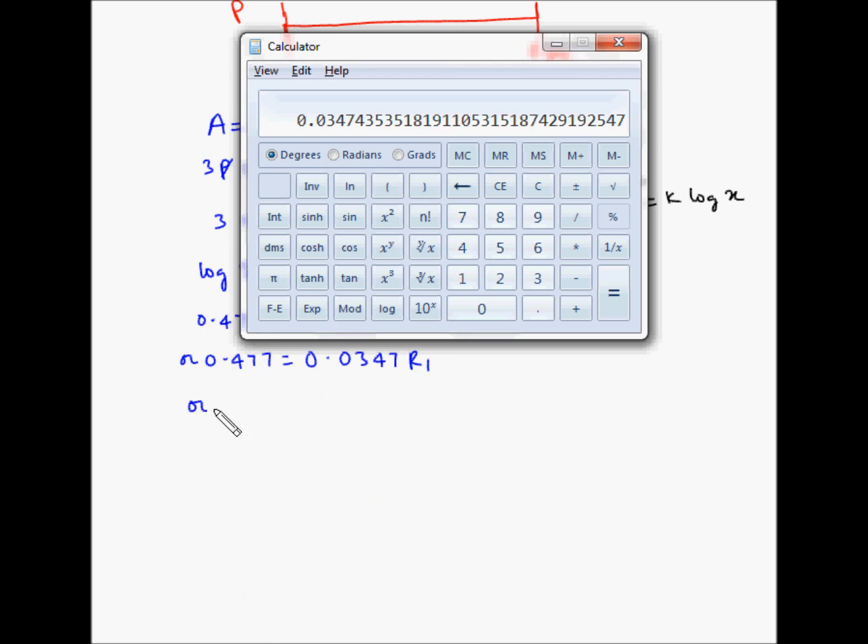R1 is equal to 0.477 divided by 0.0347. Let's find this out, so 0.477 divided by 0.0347, this becomes 13.746 percent. So R1 is equal to 13.746 percent.